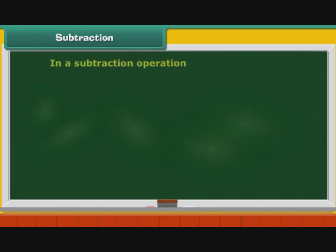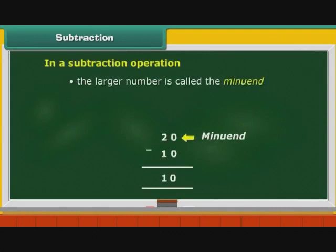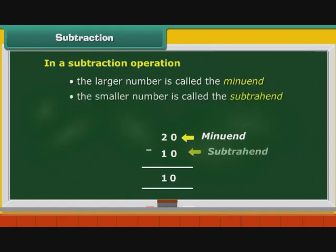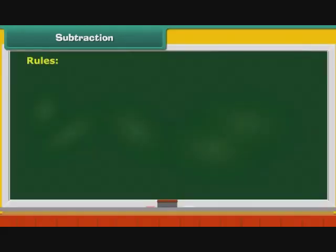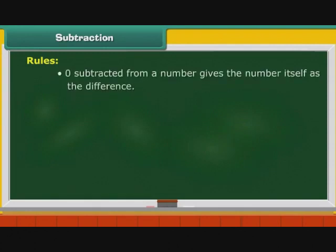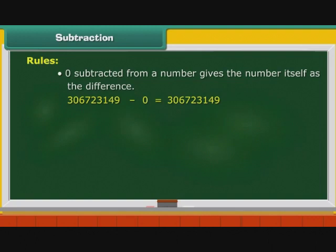In a subtraction operation, the larger number is called the minuend. The smaller number is called the subtrahend and the result is called the difference. Before we proceed, let us look at the rules of subtraction. 0 subtracted from a number gives the number itself as the difference. For example, 306723149 subtracted by 0 is equal to 306723149.